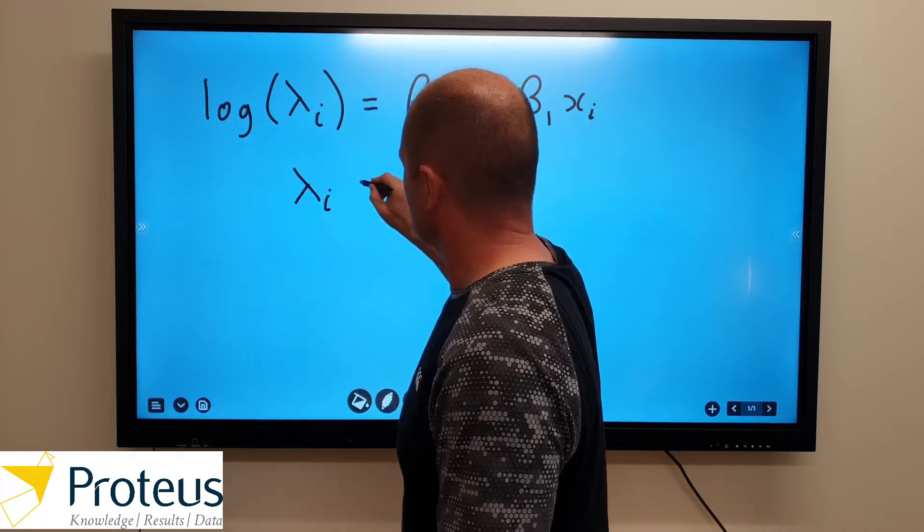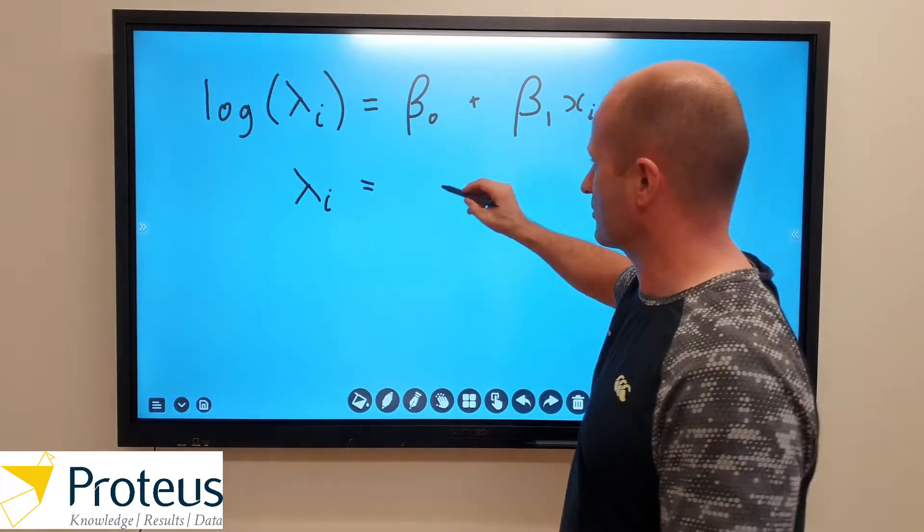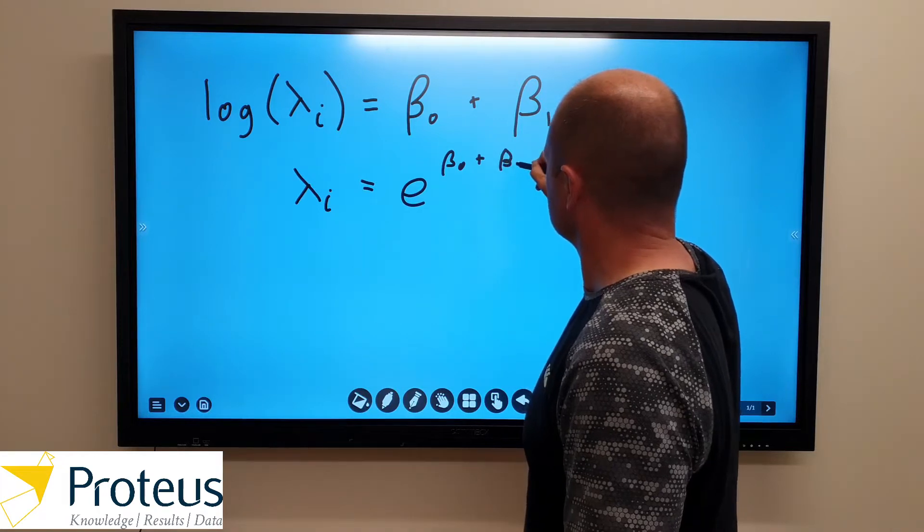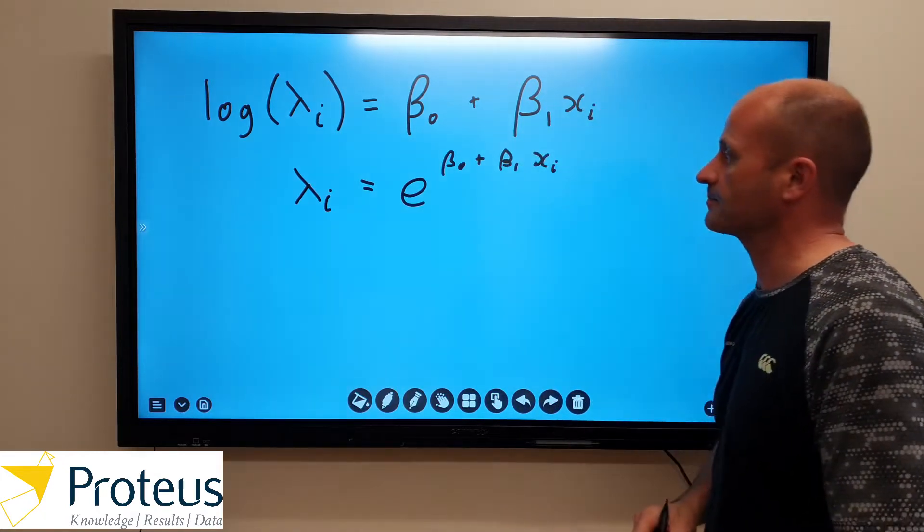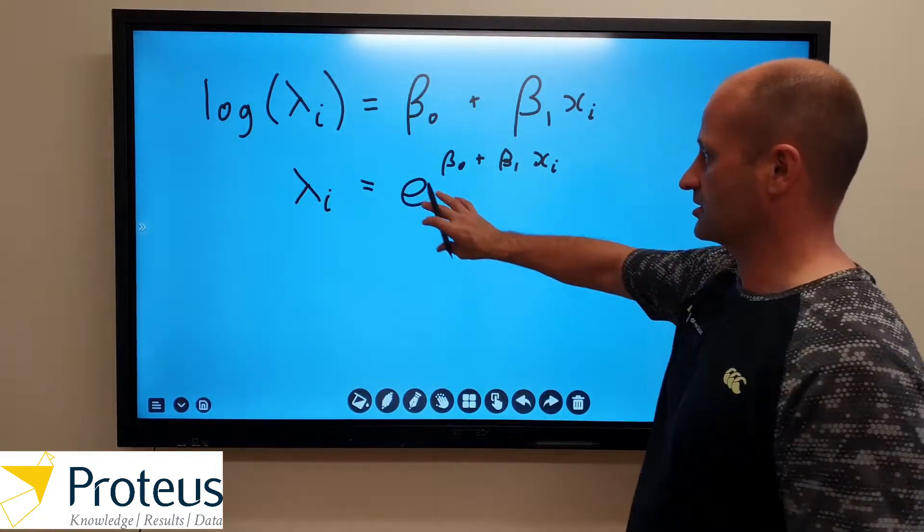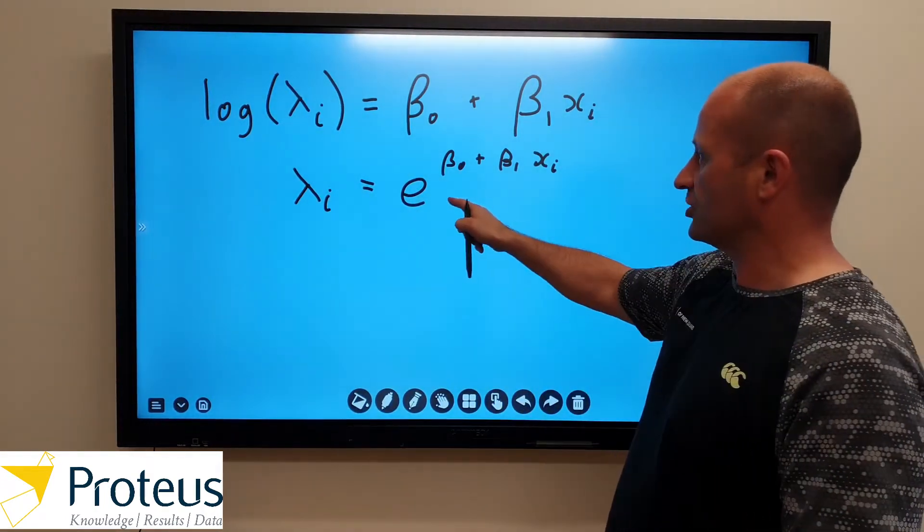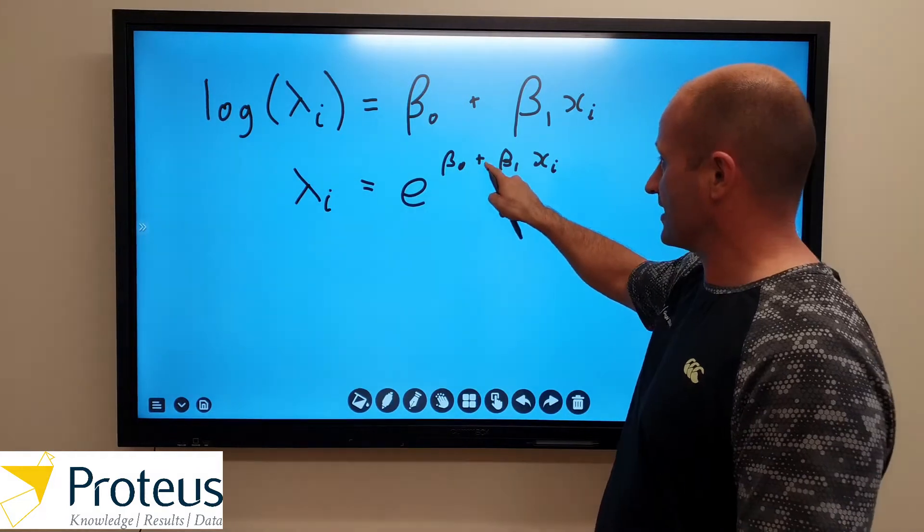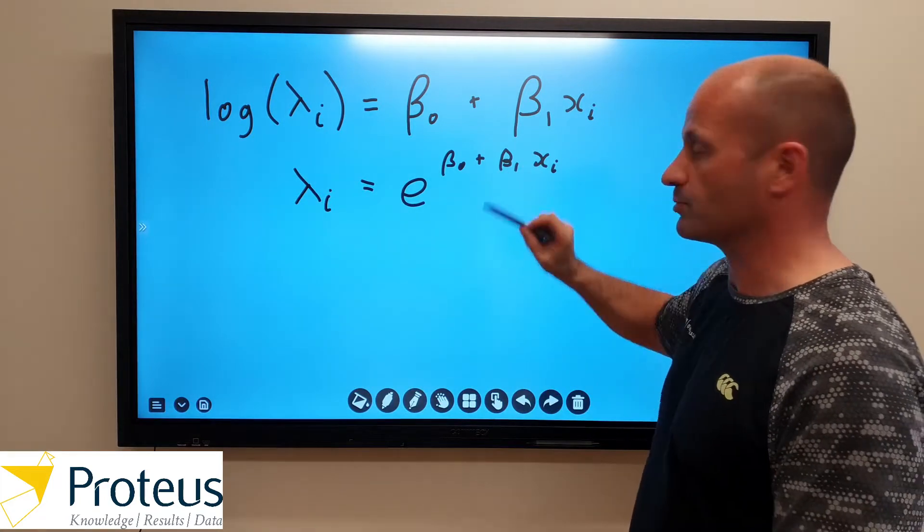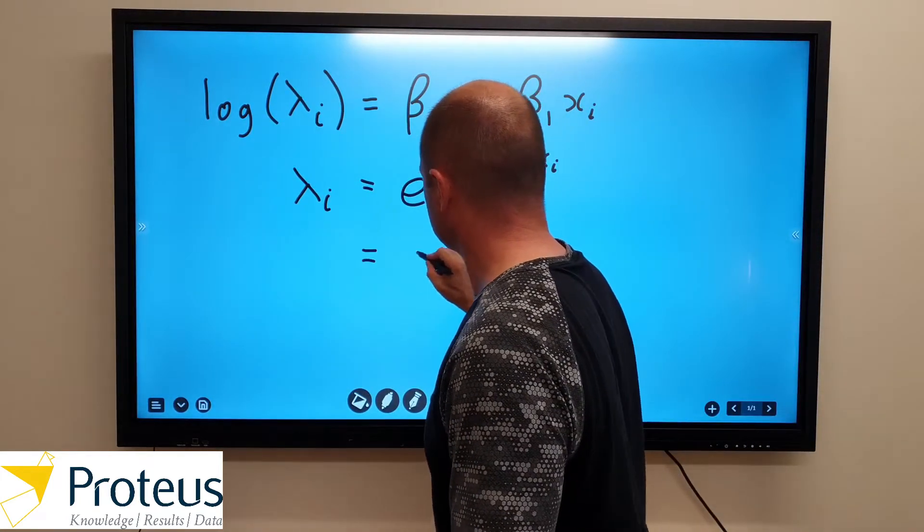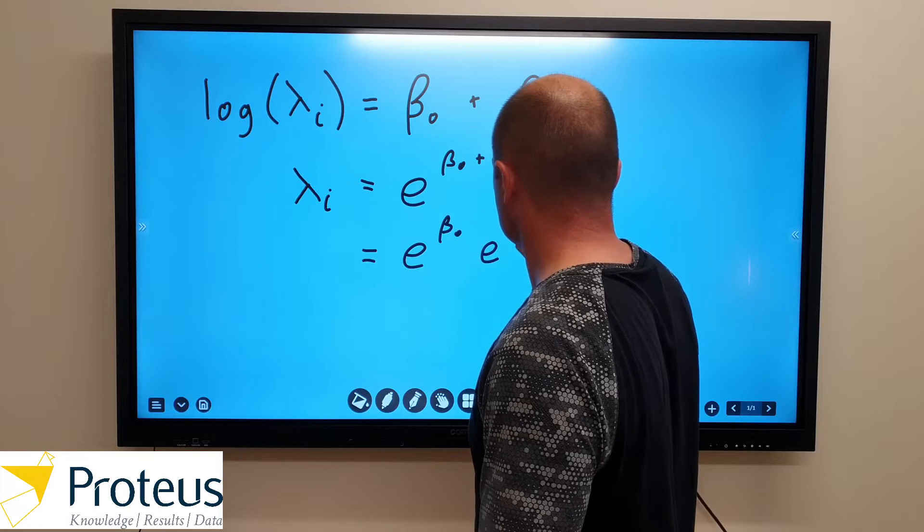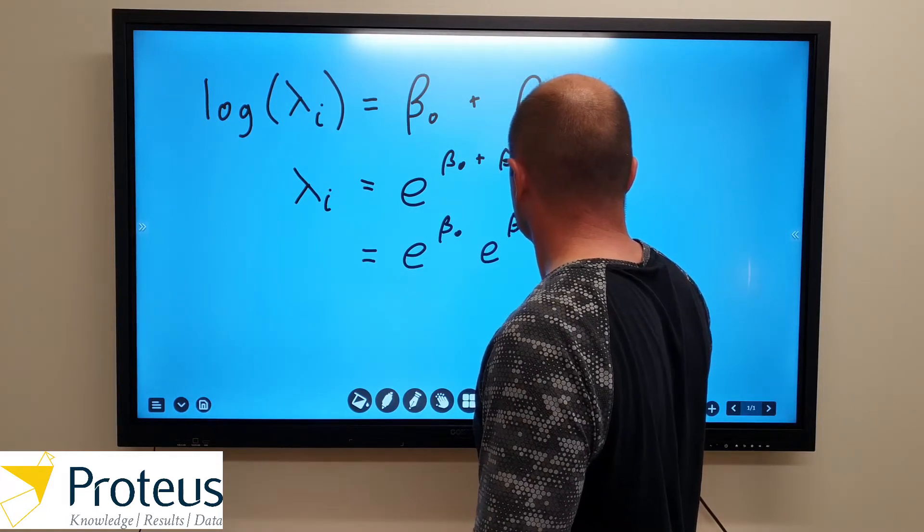Well we'll just take the exponential of both sides, so e to the beta naught plus beta 1 x i. Remember that e is just a number, it's around about 2.72, so don't get too panicky about that. And using some rules for exponentials, when we're sort of adding the powers together, that's equivalent to multiplying the individual components together. So that's equivalent to saying e to the beta naught times e to the beta 1 x i.